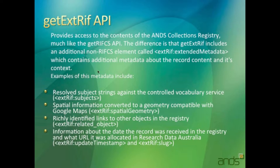The extended RIF is basically when records are ingested into the registry, we do some transformations and enriching to those records. For example, when things come in with the ANZSRCFOR codes — which are the six-digit codes — we actually convert them to the string literal and store that in the XRIF. Spatial lat-longs and coordinates, we actually convert them to a geometry that's compatible with Google Maps.